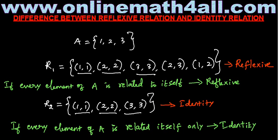I have written two sentences. The first sentence is: if every element of A is related to itself, that is reflexive. Almost the same sentence applies to identity, that is: if every element of A is related to itself only. The difference is the word 'only' — that is called identity.